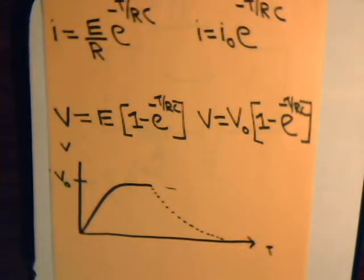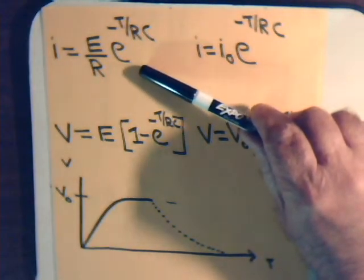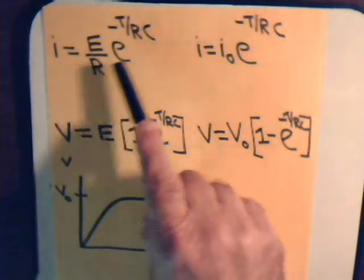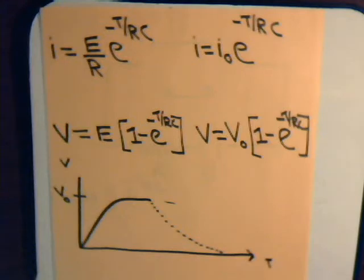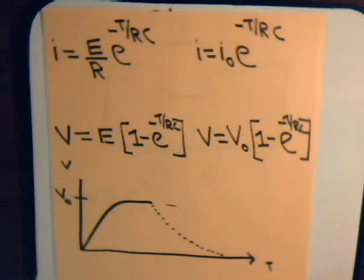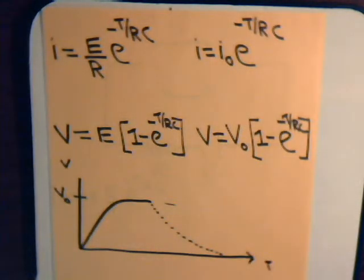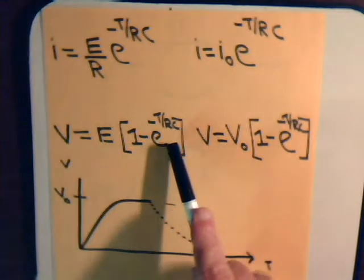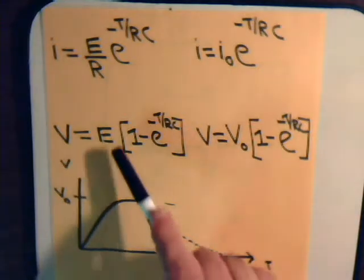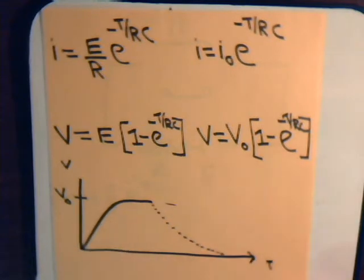In videos 61 and 62 we derived expressions for the charging current on a capacitor in a simple circuit with a capacitor, resistor, and battery. For the discharging capacitor it's the same thing except with a minus sign because the discharging current goes in the opposite direction. The more general expression is some initial value I₀ multiplied by e to the minus t over RC, and the voltage on a charging capacitor was derived for a circuit with a battery voltage source - in general it's some initial voltage times this expression.